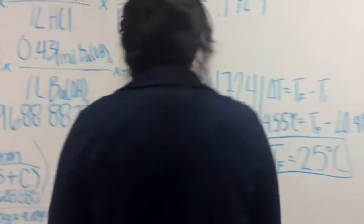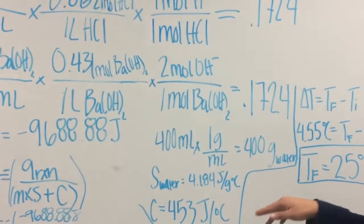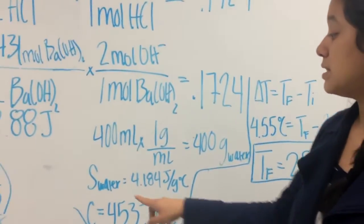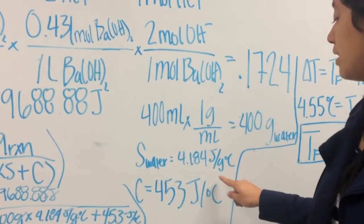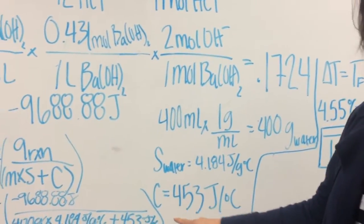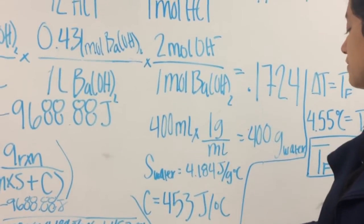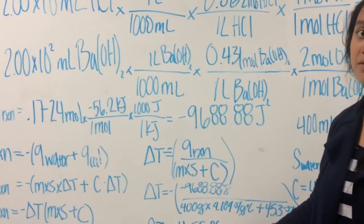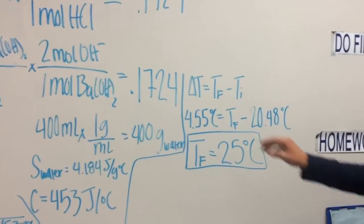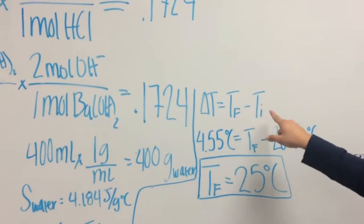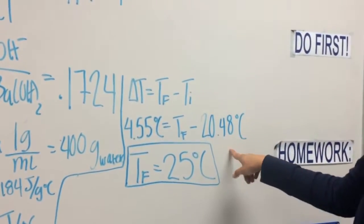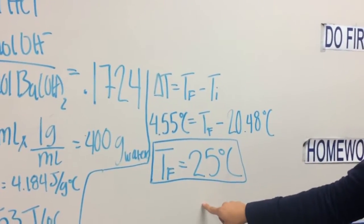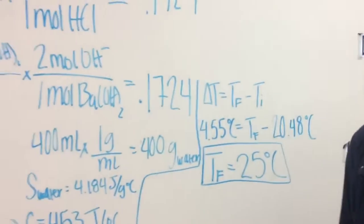We're also given 400 milliliters total volume, and we know the density of water is 1 gram per milliliter, giving us 400 grams. The specific heat of water is 4.184 joules per gram degrees Celsius, and the heat capacity given is 453 joules per degree Celsius. Plugging everything in, the change in temperature is 4.55 degrees Celsius. Since change in temperature equals final minus initial temperature, and the initial temperature is 20.48 degrees Celsius, the final temperature is 25 degrees Celsius. Thank you — this is Chemistry.